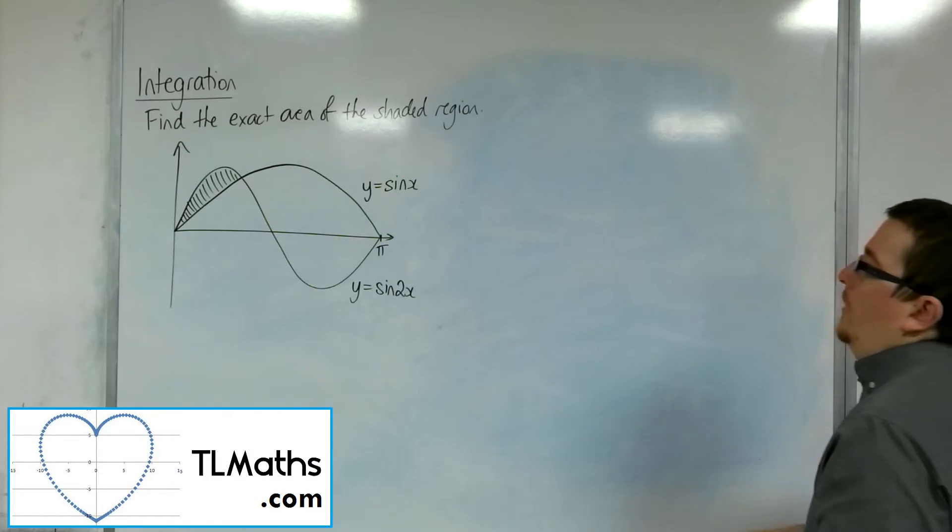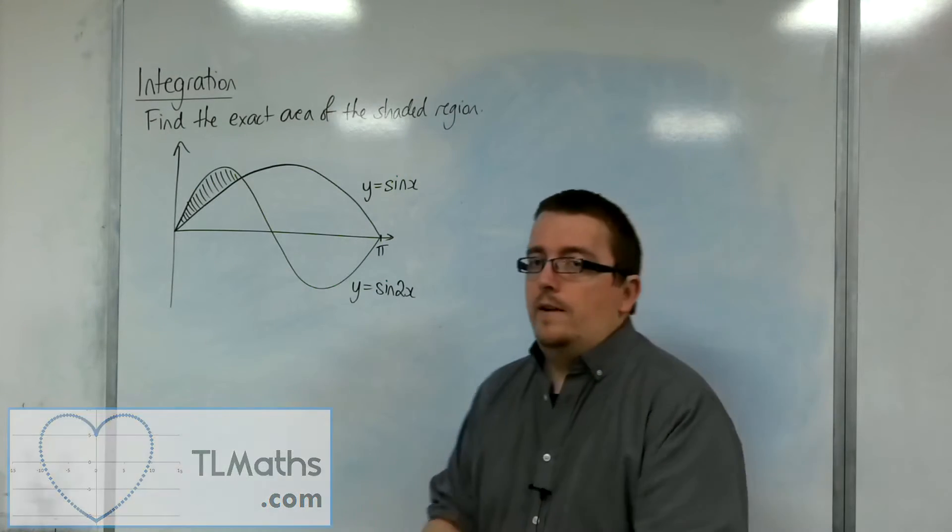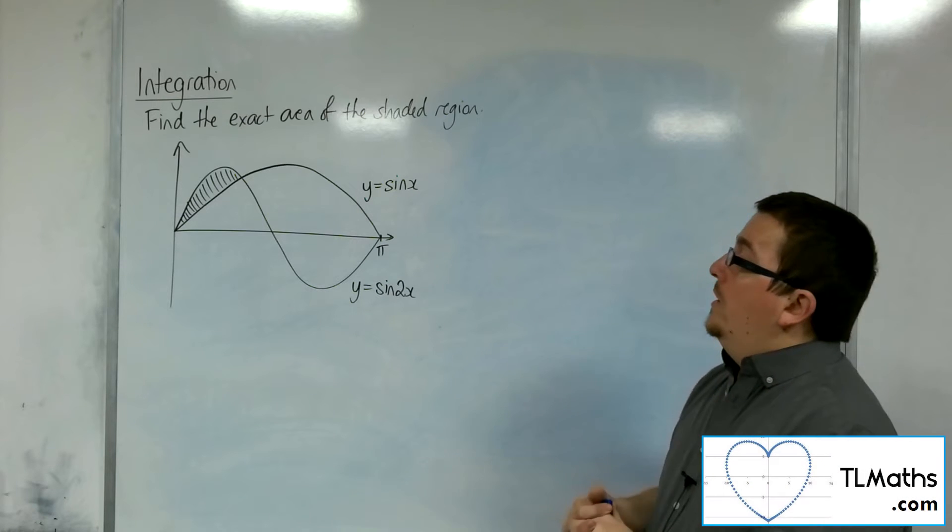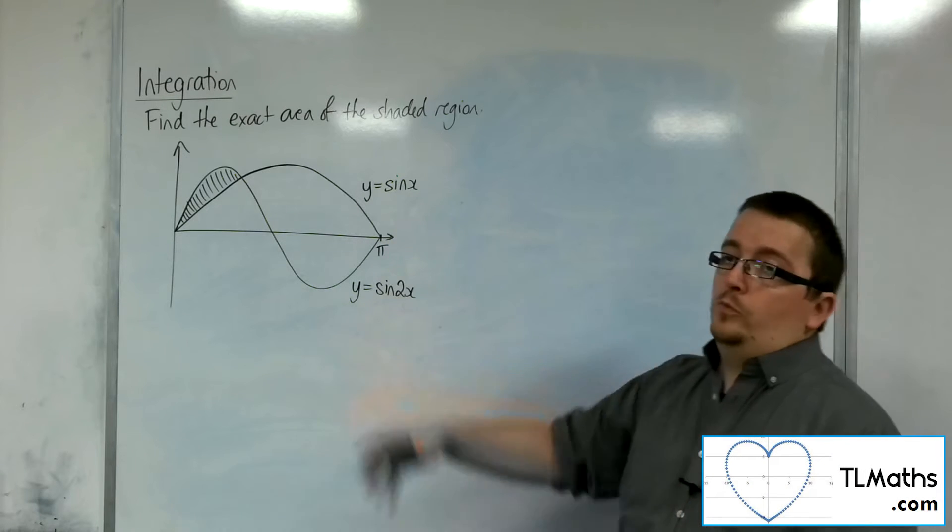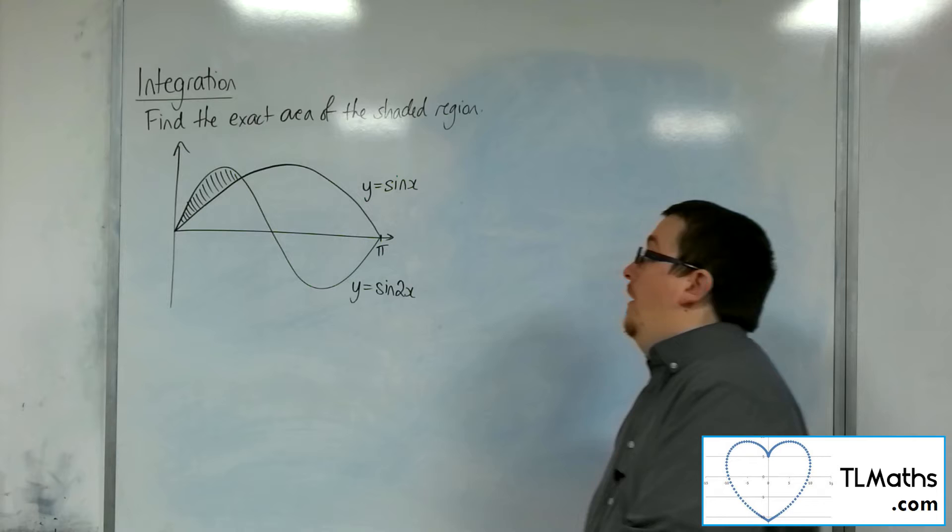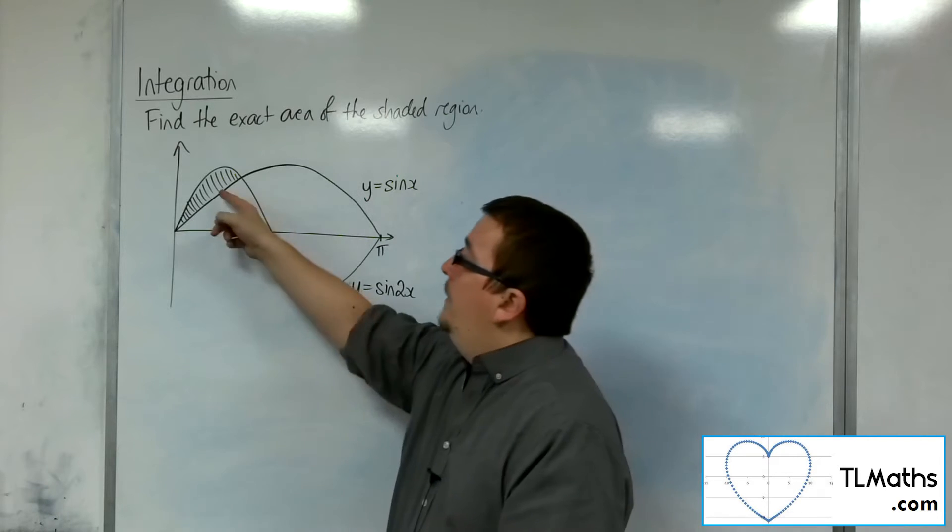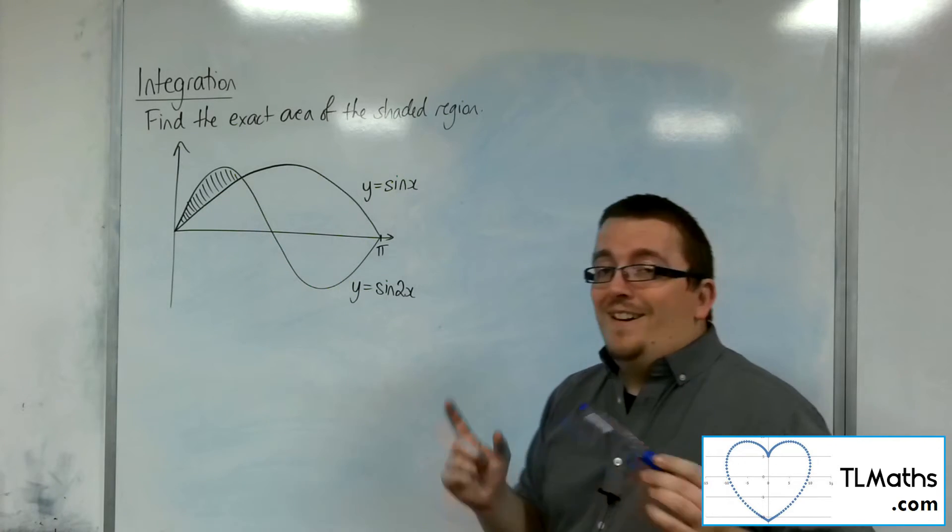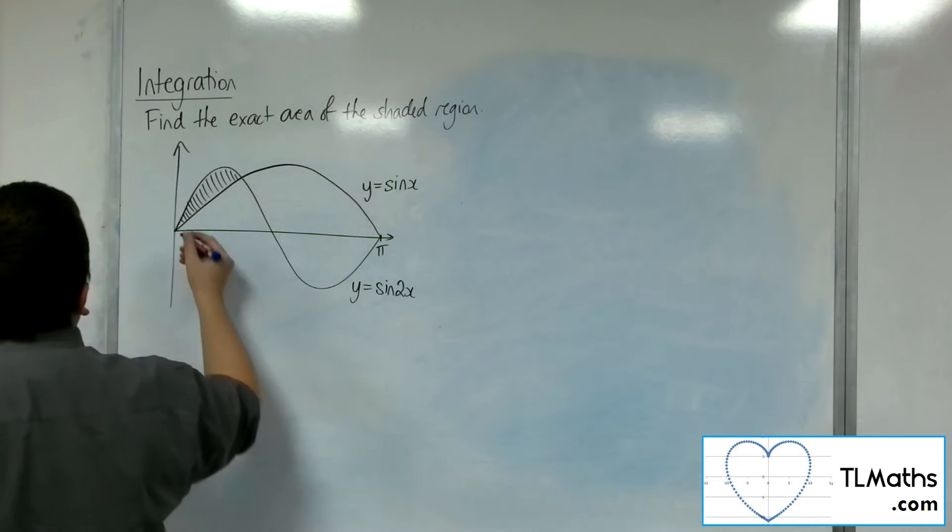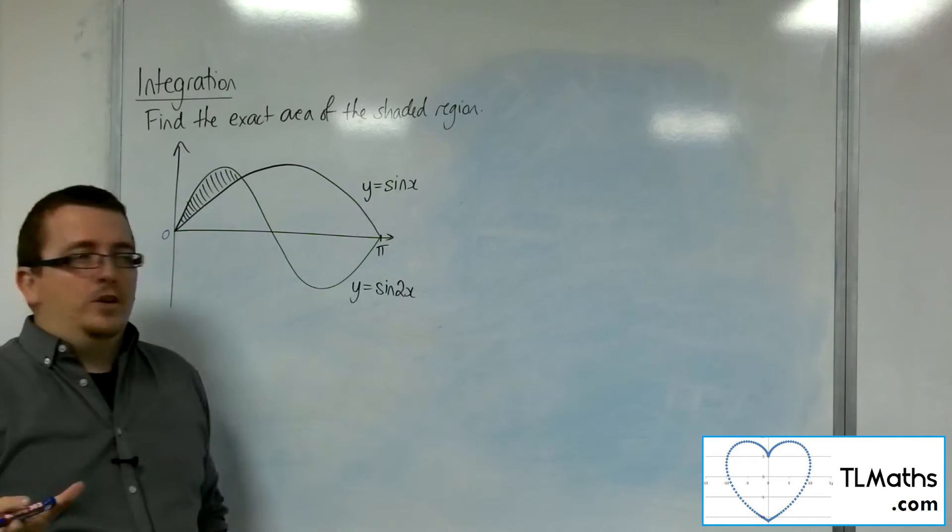OK, so in this example we've got two trig curves. We've got y equals sine x and y equals sine 2x. I've superimposed one on top of the other and I want to find this shaded region. Now I know that this is going to be 0, because I know that's at the origin.